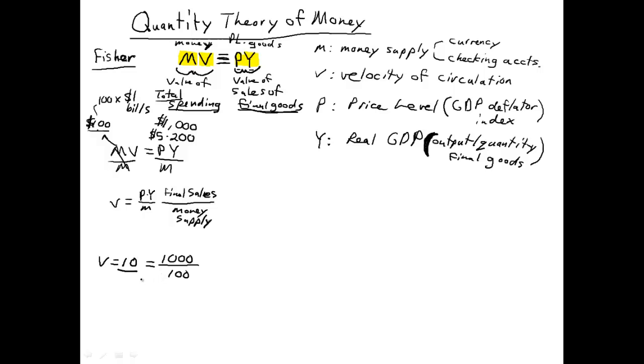Each dollar bill, it's quite simple, has to be spent 10 times. Okay, $100, if it cycles 10 times, or if each dollar is spent 10 times in the year, will buy $1,000 worth of goods. So that's what velocity means.